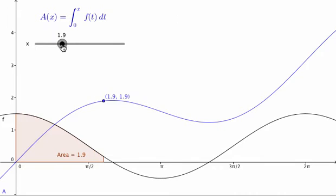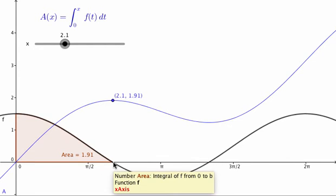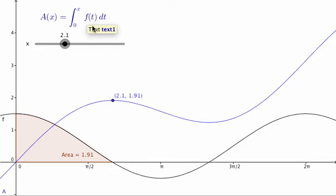Now, notice what happens here where a of x, where f of x, or f of t hits the x-axis or the t-axis. Now, all of a sudden, we're getting negative contributions to the net-signed area. And so the value of this integral function, as we let our x get bigger than about 2.1, where we're looking at right here,